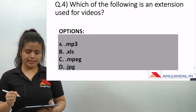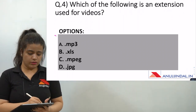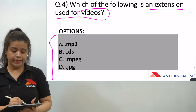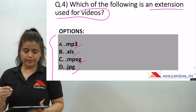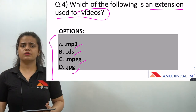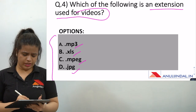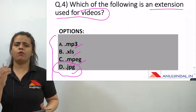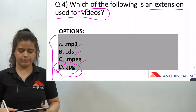The fourth question is: which of the following is a file extension used for videos? The options are mp3, xls, mpeg, and jpg. This is a direct and easy question. JPG is the image format we commonly see on WhatsApp and social media. MP3 is audio. XLS is a spreadsheet format. The answer is MPEG, which is a video file extension.